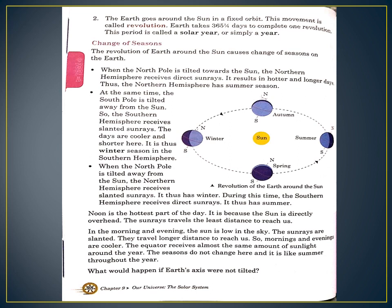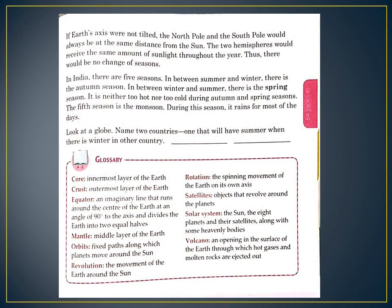Now, what would happen if our axis were not tilted? Move to page number 99. If our axis were not tilted, the north pole and the south pole would always be at the same distance from the sun. The two hemispheres would receive the same amount of sunlight throughout the year and there would be no change of seasons. In India there are five seasons: summer, monsoon, autumn, spring, and winter. Autumn and spring are neither too hot nor too cold — they are quite pleasant. Monsoon comes after summer and before autumn.